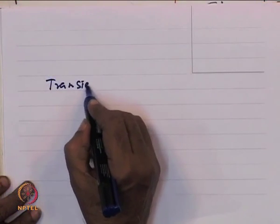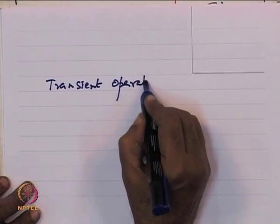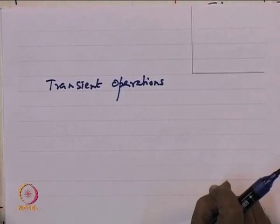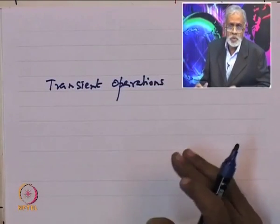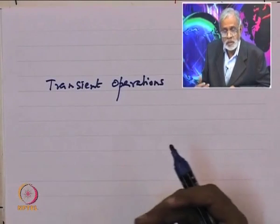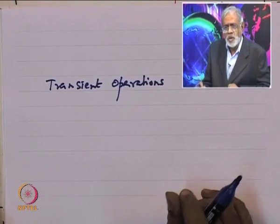A related issue that all of us recognize is that when you are running a process, there is something called startup, something called shutdown, and something called safety — and sudden issues as a result of which you may have to shut down processes. All transient operations become crucial. Transient operations are issues in which we have to understand how the process deals with various kinds of disturbances that might happen.